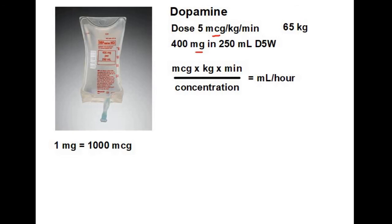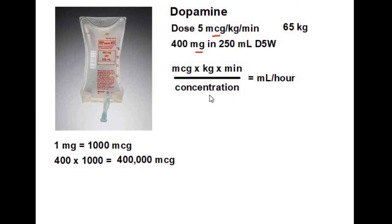It's 1,000 micrograms per milligram, so we multiply 400 milligrams times 1,000 micrograms and get 400,000 micrograms in the bag — the same amount of drug, just expressed in different units. Now we divide 400,000 by 250 milliliters and get 1,600 micrograms per milliliter, which is a very standard concentration for dopamine.